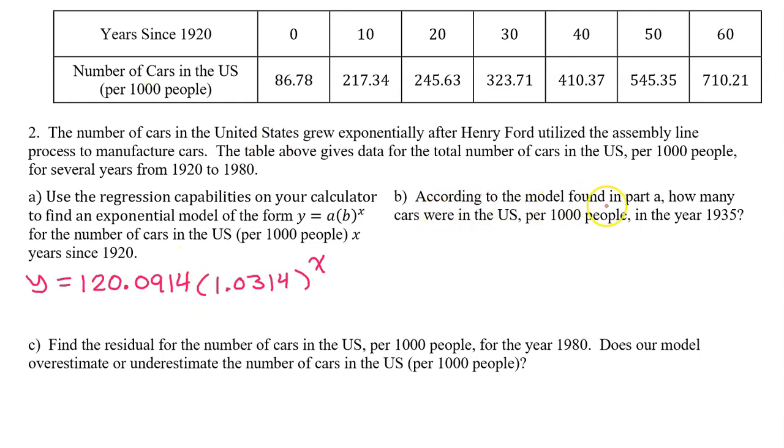Part B: According to the model found in Part A, how many cars were in the U.S. per 1,000 people in the year 1935?